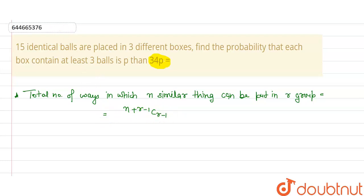Right, now here we have 3 boxes. So total outcome when 15 balls are placed in 3 boxes will be the total number of ways in which 15 similar balls can be put in 3 boxes, which will be equal to 15 plus 3 minus 1 C 3 minus 1, that is equal to 17C2. This is the total outcome.